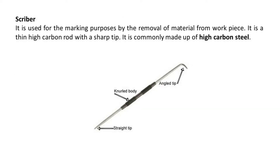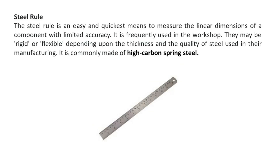A scriber is used for marking purposes by the removal of material from a workpiece. It is a thin high carbon rod with a sharp tip, commonly made up of high carbon steel. A steel rule is an easy and quickest means to measure the linear dimensions of a component with limited accuracy. It is frequently used in the workshop and may be rigid or flexible depending upon the thickness and quality of steel used. It is commonly made of high carbon spring steel.